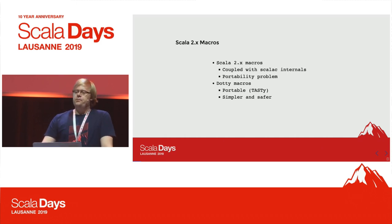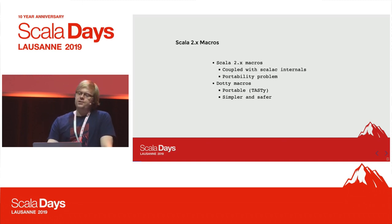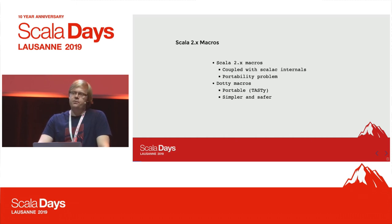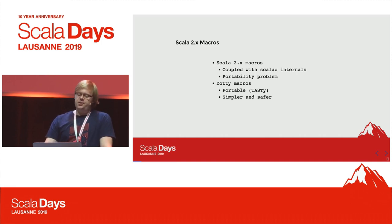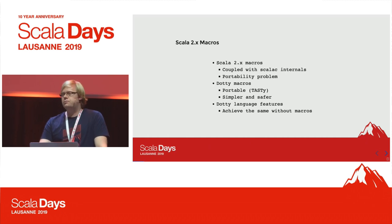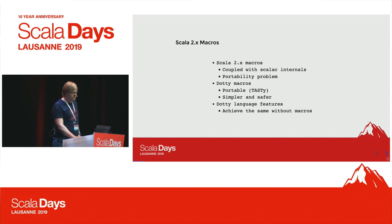We focused on being firstly more portable, leveraging the Tasty file format that we have now. We also focused on making life simpler and safer for both the implementers of the macros and the users of the macros. We also added some new language features which sometimes can just be used instead of the macros that we would have used in Scala 2.